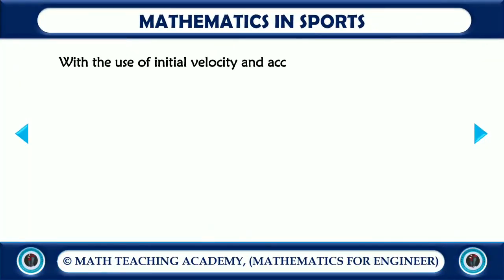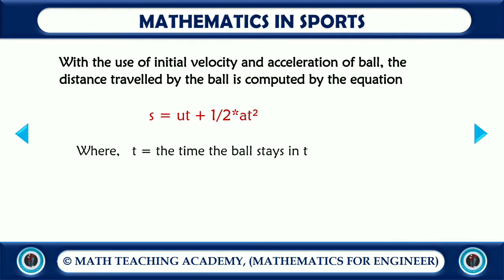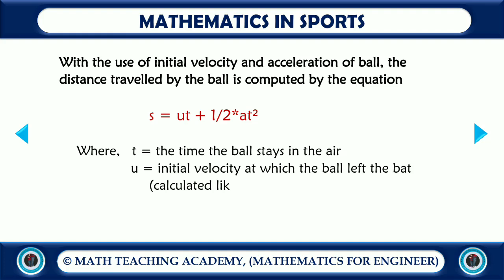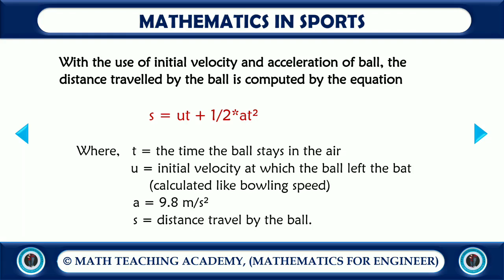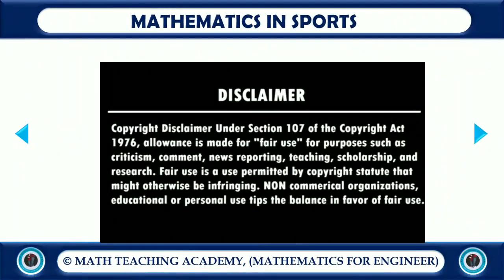With the use of initial velocity and acceleration of the ball, the distance traveled by the ball is computed by the equation s = ut + ½at², where t is the time the ball stays in the air, u is the initial velocity at which the ball left the bat, a is the gravitational force (9.8 m/s²), and s is the distance traveled by the ball.